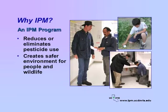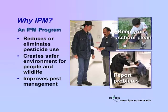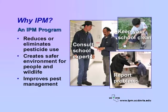Combining several effective methods into one program gives better results. IPM programs save time, money, and improve management of pests. IPM programs require that people work together — everyone has a role. Students, teachers, and administrators need to keep their school grounds clean and report pest problems. Custodians respond to problems or notify school IPM coordinators. The IPM coordinator keeps records and designs an IPM program specific to the needs of each individual school.